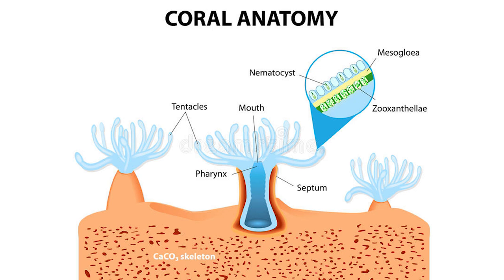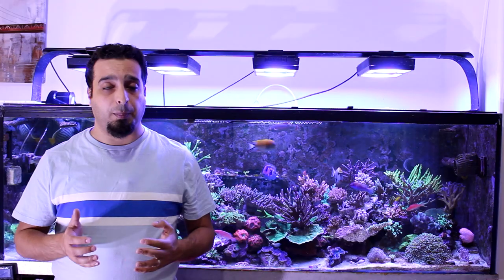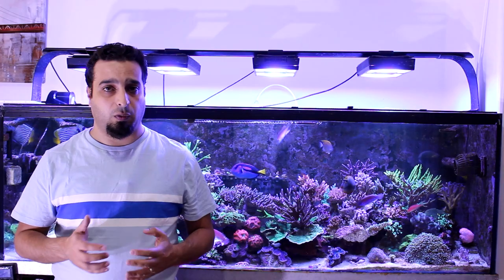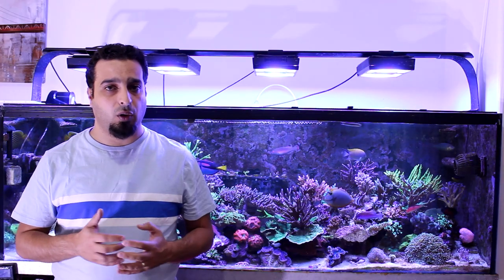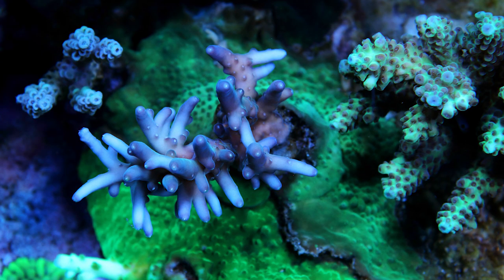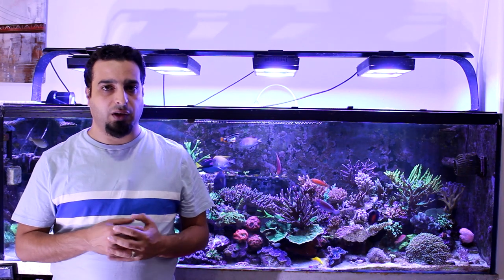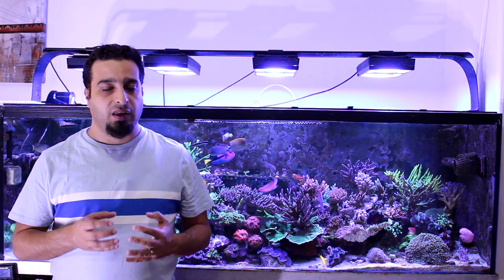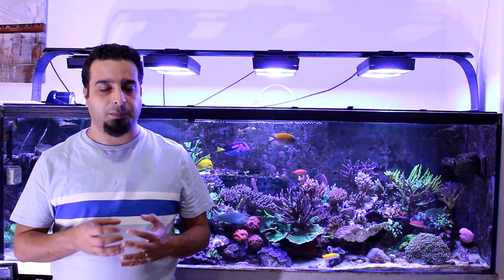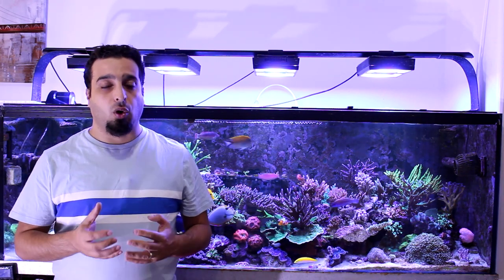A polyp has a sac-like body and an opening or mouth surrounded by stinging tentacles. The polyps use calcium and carbonate ions from seawater to build a hard skeleton made of calcium carbonate. This skeleton protects the soft and delicate body of the polyps.